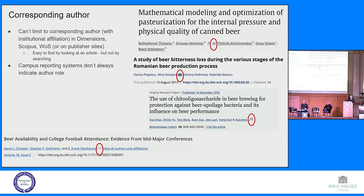You can see corresponding author indicated in records across Dimensions, Web of Science, publisher sites, and Scopus — usually with the little envelope icon — but it's not searchable at scale.